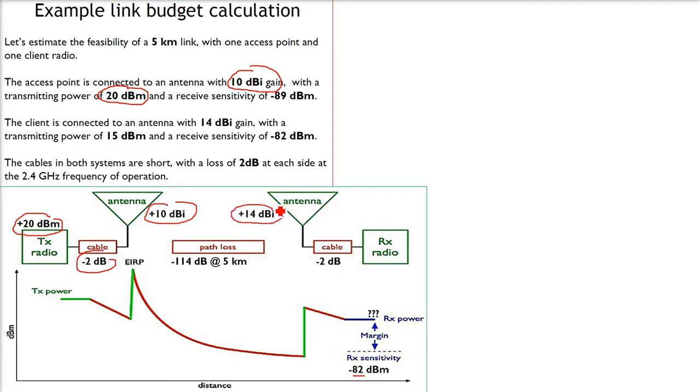Coming to the client side, the antenna gain on the receiver side is 14 dB, plus 14 dB. There is a path loss given for five kilometers. The receiver sensitivity we have to consider is minus 82 dBm. The path loss is minus 114 dB, and we're talking about a five kilometer link. Let us assume it is 2.4 gigahertz frequency. This is 20 dBm, the transmission power.